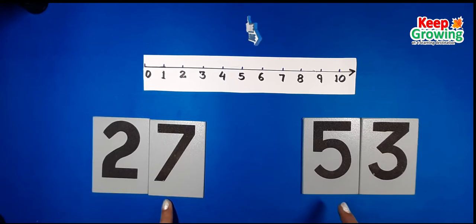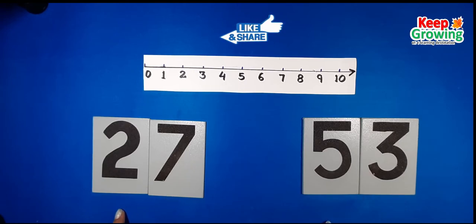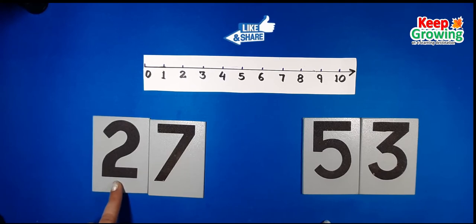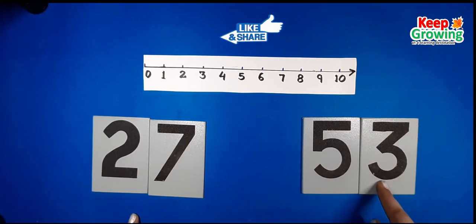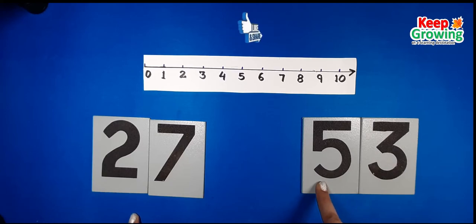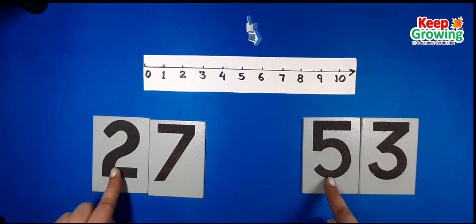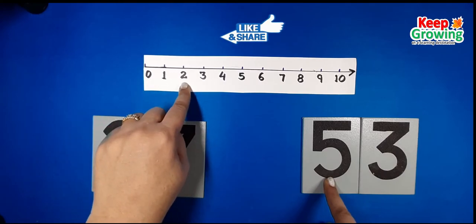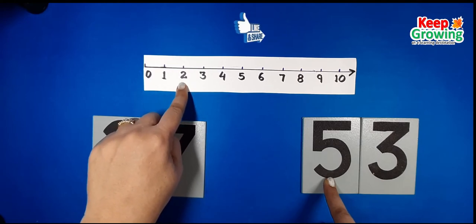We always read the number from left to right. When we compare two-digit numbers — for example, number 27 and number 53 — we always compare the digit in their tens place. Number 27 has two in its tens place and number 53 has five in its tens place, so we compare number two to number five.